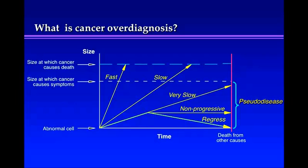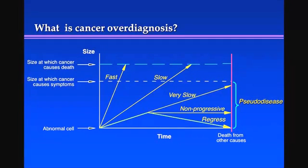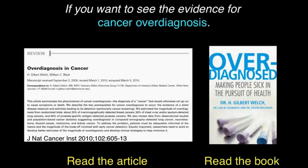What is cancer over-diagnosis? It's detecting any one of these three categories — something that the patient would otherwise never experience. These have been dubbed pseudo-disease. Literally, false disease. I kind of like that label, because I think of disease as something the patient experiences, and pseudo — meaning false — is something the patient is actually not destined to experience. If you want to see the evidence for cancer over-diagnosis, I suggest you read the article 'Over-Diagnosis in Cancer' with my colleague William Black in the Journal of the National Cancer Institute in 2010, or read the book 'Over-Diagnosed' with my colleagues Lisa Schwartz and Steve Woloshin.